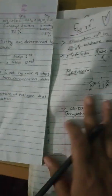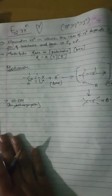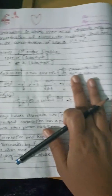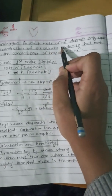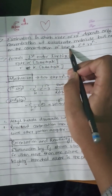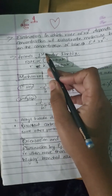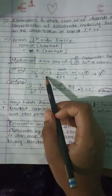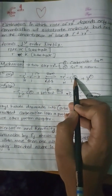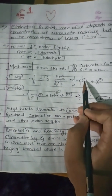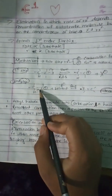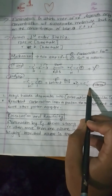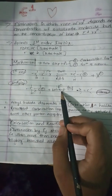Now for E1 reaction: the rate of reaction depends only on the concentration of the substrate — first order kinetics. The first step is carbocation formation. Reactivity follows tertiary greater than secondary. The second step is alkene formation using a weak base.